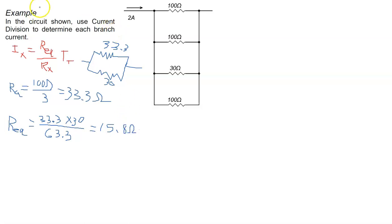We'll use this now in our current division calculations. Remember that this current here, the two amps, we'll consider IT. We'll call this one I1, this one I2, and then we have I3 and this one down here I4.